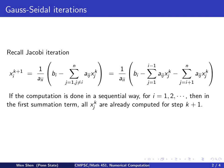So we would be better off if we use those better values right away. So we will replace all these xj k's with the newly computed xj k plus 1. And this is exactly the Gauss Seidel iteration.